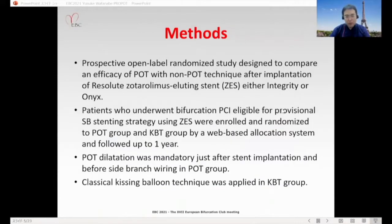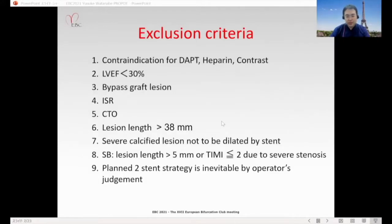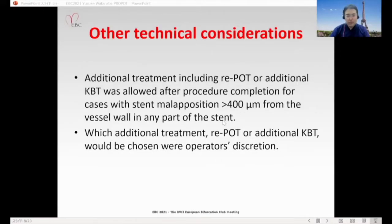This was a prospective open-label randomized study designed to compare the efficacy of POT and KBT technique after implantation of Resolute Integrity or Onyx stents. POT dilatation was mandatory just after stent implantation and before side branch wiring in the POT group. Classical KBT was applied in the KBT group. Additional treatment including re-POT or additional KBT was allowed after procedure completion for cases with stent malapposition over 400 microns from the vessel wall.